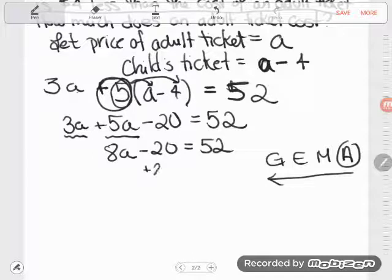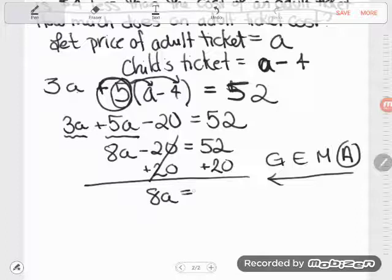The way to do that would be the opposite of minusing. The opposite of minusing is adding. So I'll add 20. Rule of algebra is I can do whatever I want to an equation as long as I do it to both sides. On this side, negative 20 and positive 20 cancel, leaving me with just 8A. And on this side, 52 plus 20. That's the math I need to do. It comes to 72.